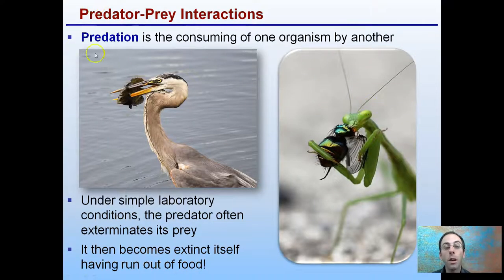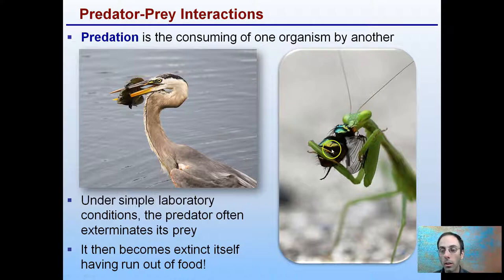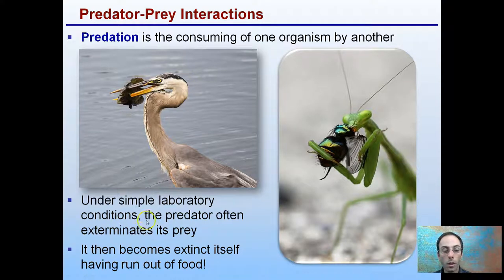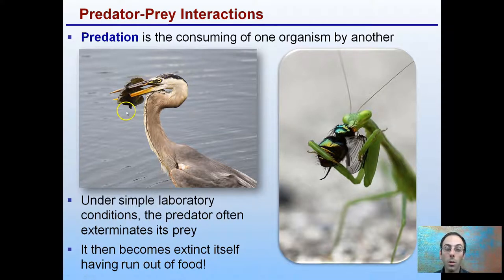Predator-prey interactions: predation is the consuming of one organism by another. Here we have the praying mantis eating the fly, and a bird eating a fish. The poor fish and the fly are not going to survive. Under simple laboratory conditions, predation often exterminates the prey, and then the predator becomes extinct itself because it runs out of food — if the great blue heron ate all of the sunfish, it would eliminate its own food source. Typically, this doesn't happen in nature.